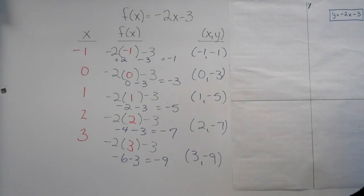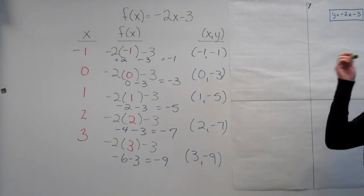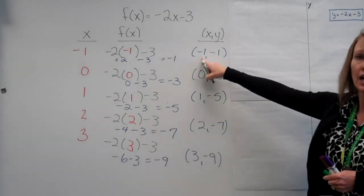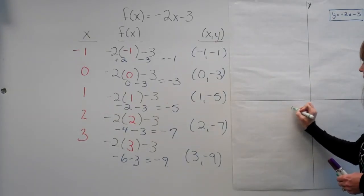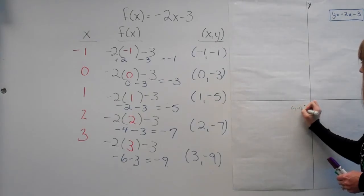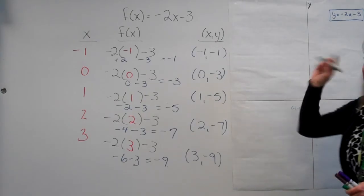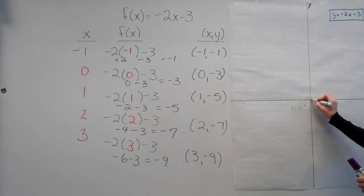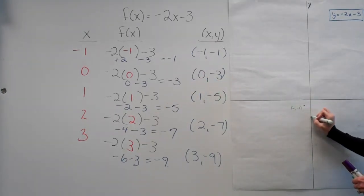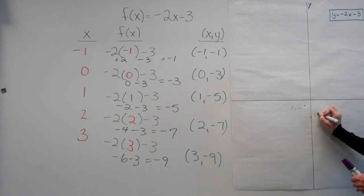All we're going to do now is we're going to, in a single color, we're going to plot the points. So negative 1 x, negative 1 y, and I'm going to label it. Negative 1, negative 1. Same color. Zero, negative 3. So x is zero, y is negative 1, 2, 3. And I'm going to label it.